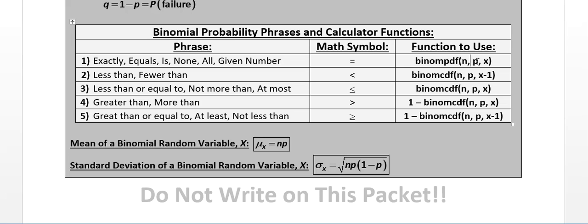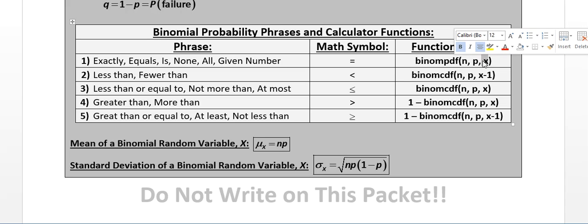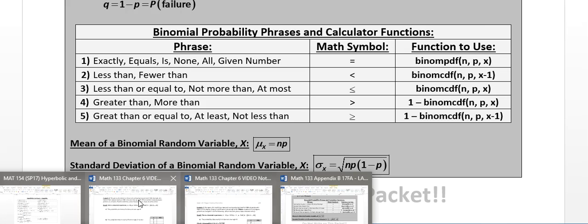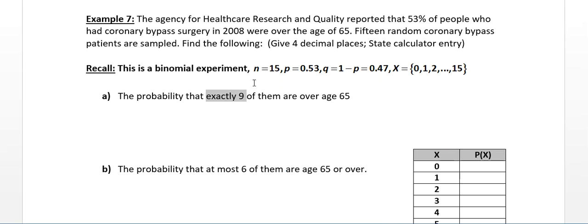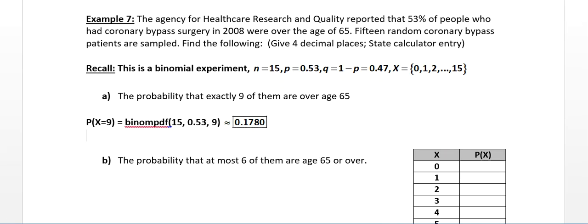N is 15 for us, P is 0.53, and X in our particular problem is 9 for part A. So we're going to compute binomPDF with 15, 0.53, 9.